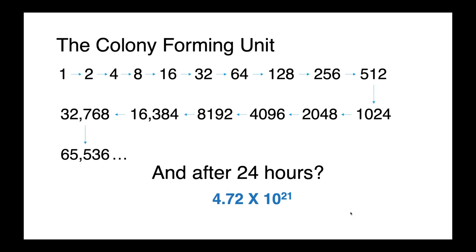Now this is obviously just a thought experiment — lots of things would become limiting far before we would reach this number. Waste products would build up and become toxic, nutrients would become depleted, and space would probably become limiting as well. But all of this to say that bacteria are tiny, they divide rapidly, and small numbers quickly become big numbers.